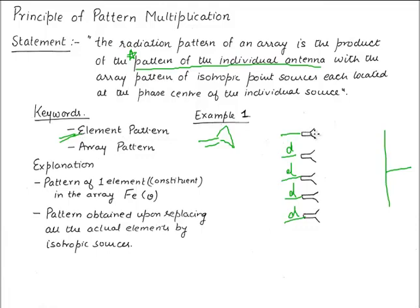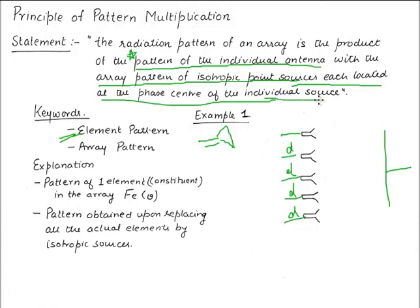If you take one antenna out of your array and you know its radiation pattern, then you can use this principle. The second requirement is the array pattern of isotropic point sources, each located at the phase center of the individual sources. That will be known as the array pattern.